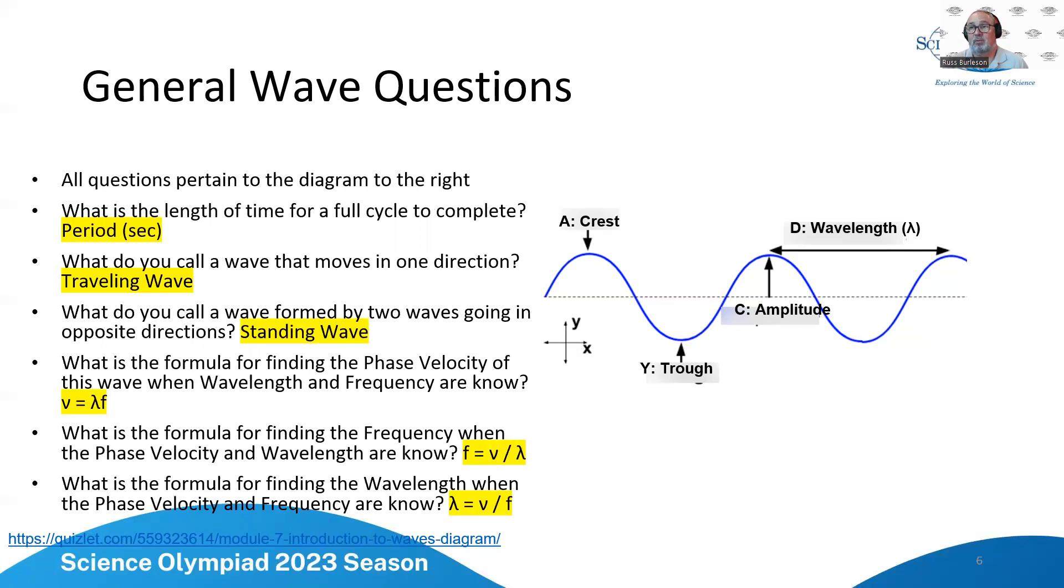The period of time for a full cycle to complete is called a period. It's in seconds, and a wave that moves in one direction is a traveling wave, and one that's formed by two waves or even more waves going in opposite directions is a standing wave. The formula for the phase velocity is velocity equals wavelength times frequency, or frequency equals velocity divided by wavelength, or wavelength equals velocity divided by frequency.